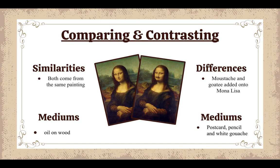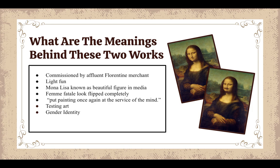What are the meanings behind these two works? The Mona Lisa may have been commissioned by an affluent Florentine merchant, while La Jaconde was simply light fun. Duchamp wanted to flip the idea of the Mona Lisa being known as a beautiful figure — the femme fatale — and he put painting once again at the surface of the mind by drawing a mustache and goatee on one of the most iconic works of art of all time, giving her a gender identity swap.